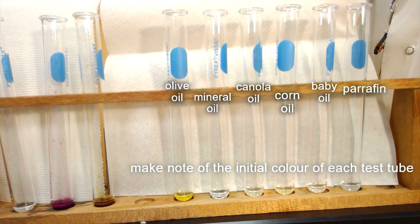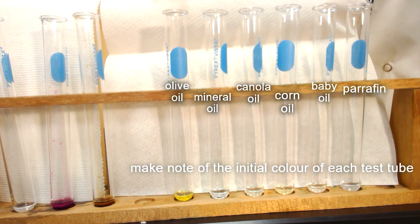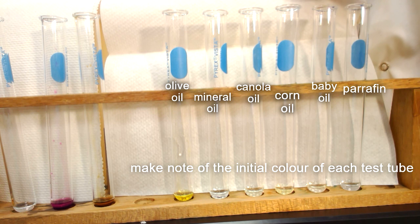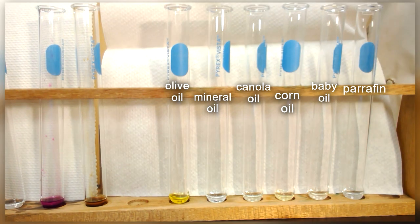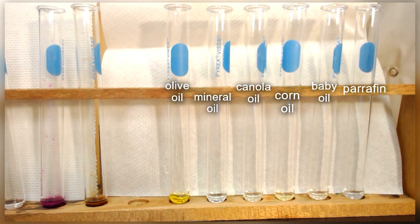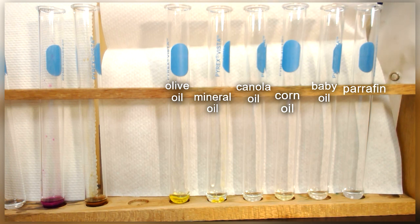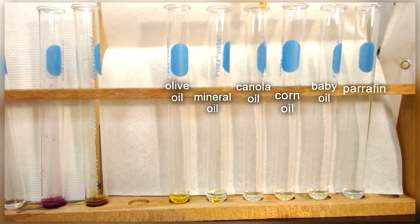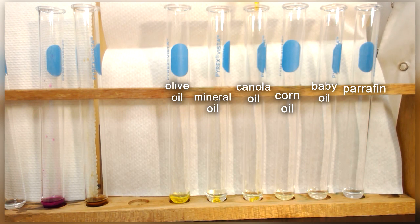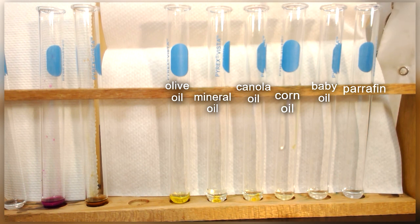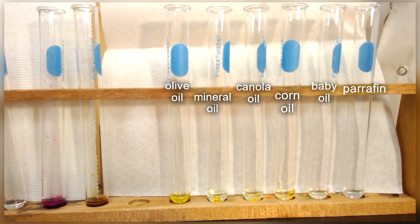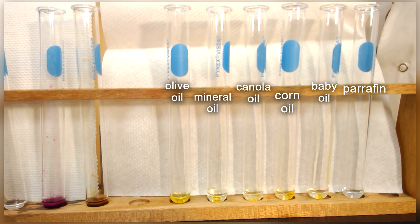So we're going to add a few drops of our bromine, aqueous bromine, to our olive oil, and three drops, and then we're going to add three drops to mineral oil next, number two, mineral oil. We're going to let those just sit in there. Your third fat that we are testing is canola oil, and we'll take a look at these after a bit here. Next is corn oil, fourth one from your left. Second last is baby oil, and very last is paraffin oil.